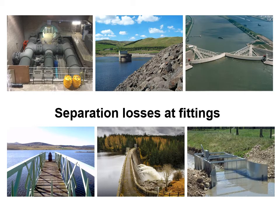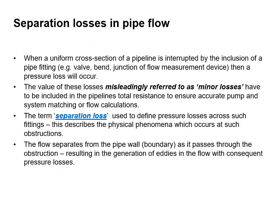Whenever a uniform cross-section of a pipe is interrupted by a pipe fitting — for example a valve, a bend, a junction, or a flow measurement device — a pressure loss will occur. The value of these losses is often referred to as minor losses, but they must be included in the pipeline's total resistance to ensure accurate pump and system matching. The term separation loss is used to define these pressure losses, describing the physical phenomenon where flow separates from the pipe wall as it passes through the obstruction, resulting in a generation of eddies or vortices and consequential pressure loss.